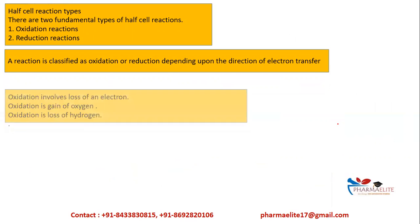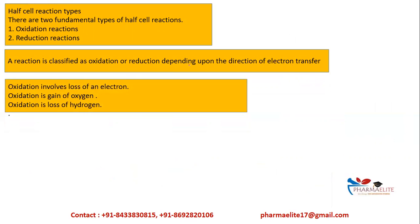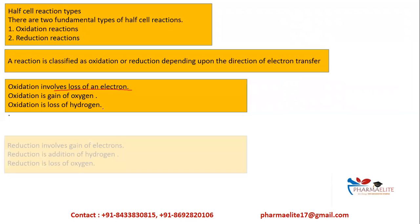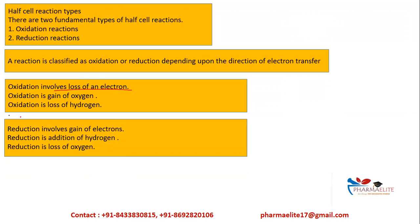Oxidation is loss of electrons — copper is oxidized to Cu²⁺. Oxidation is also gain of oxygen, or loss of hydrogen. Reduction is exactly the opposite: gain of electrons, loss of oxygen, and gain of hydrogen. When you add hydrogen, it is reduction; when you add oxygen, it is oxidation. This is how you can describe oxidation and reduction in simple terms.